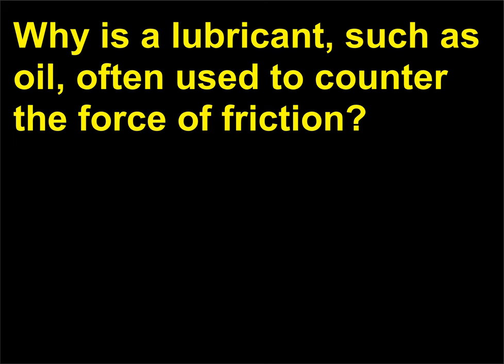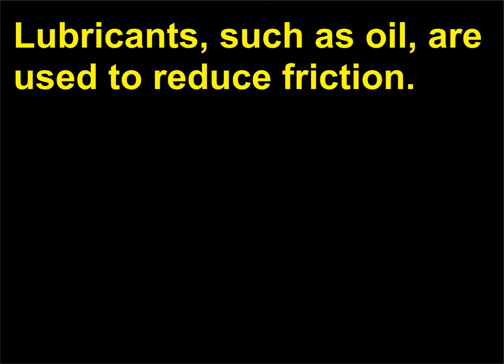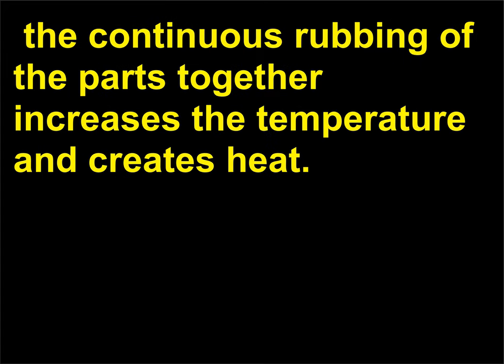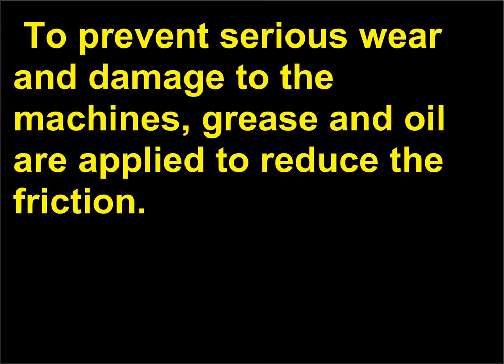Why is a lubricant, such as oil, often used to counter the force of friction? Lubricants, such as oil, are used to reduce friction. For example, in machines consisting of metal parts, the continuous rubbing of the parts together increases the temperature and creates heat. To prevent serious wear and damage to the machines, grease and oil are applied to reduce the friction.